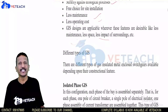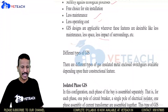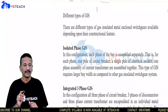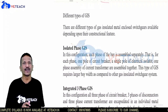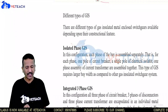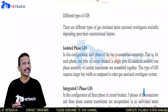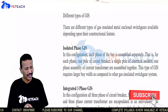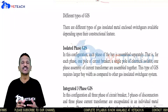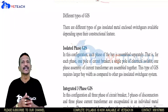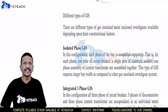There are different types of GIS. The first is isolated phase GIS, which is a newer technique. In this type, each phase of a bay — where two incoming/outgoing lines connect — uses one pole of a circuit breaker, a single pole of an electrical isolator, and one phase of a current transformer. This is called a single system or isolated phase GIS.